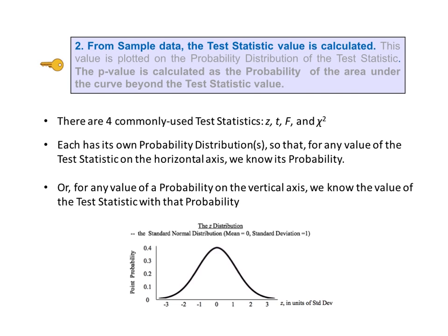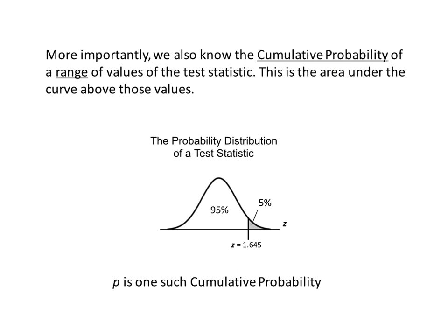We can see in the diagram that the probability of Z equals zero is about 0.4, or 40%. More importantly, the distribution of a test statistic gives us cumulative probabilities of a range of values. For example, the cumulative probability of the range of values of Z starting with 1.645 and extending to positive infinity is 5%. This is calculated as the integral — the area under the curve from 1.645 to the right. P is one such cumulative probability. Alpha is another, which is why we can compare P to alpha in a statistical test.